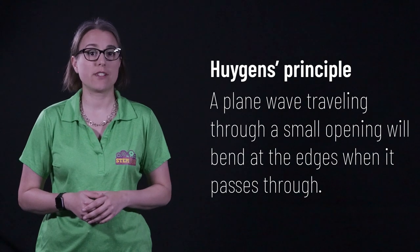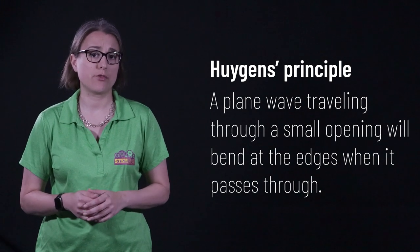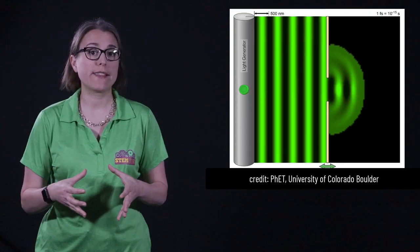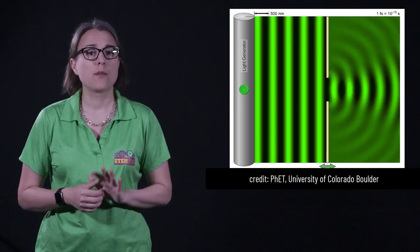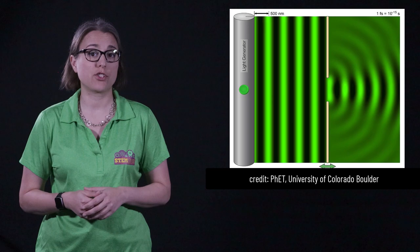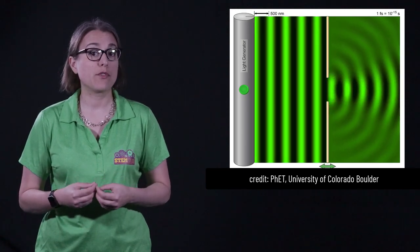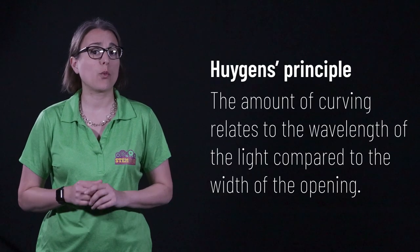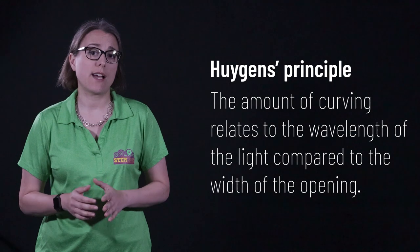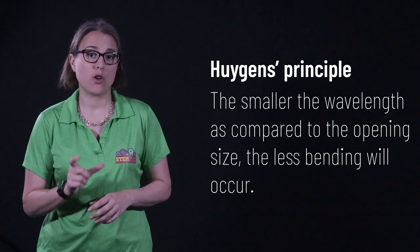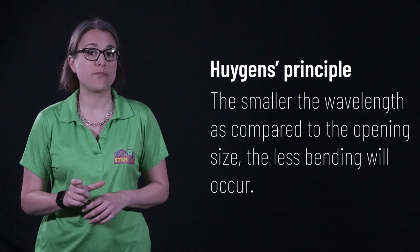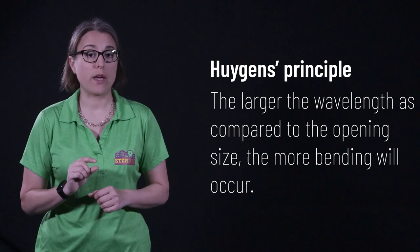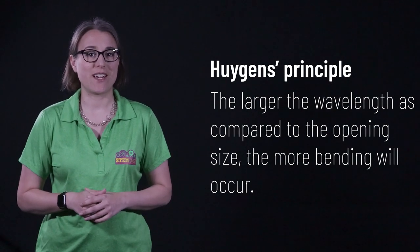Huygens' principle is particularly useful in describing what happens when light passes through a small opening. A plane wave traveling through a small opening will curve at the edges when it passes through. Because Huygens' principle describes light as being a collection of spherical waves, it provides a description of that spherical shape at the edges. The amount of curving relates to the wavelength of light traveling through as well as the size of the opening. The larger the width of the opening as compared to the wavelength of the wave, the less pronounced the curving of light will be. The smaller the width of the opening as compared to the wavelength of the wave, the more pronounced the curving of the light will be.